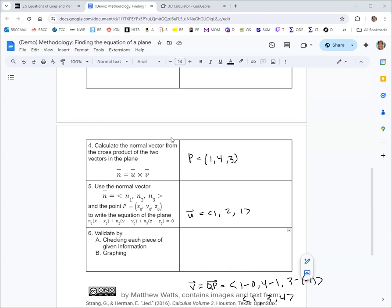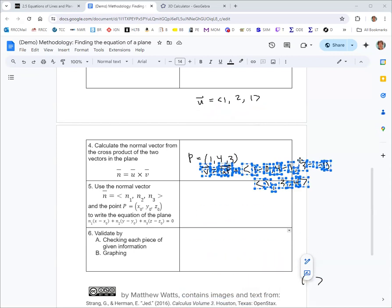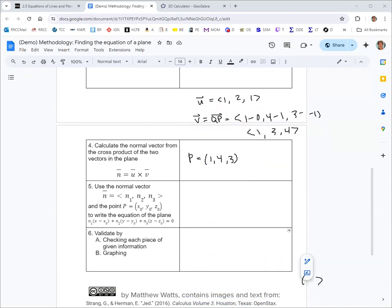All right, so now we will take the two vectors, u and v. And we will take their cross product. The cross product, remember, u and v are both vectors in the plane. And so their cross product should be the normal vector to the plane, which is what we use to get the equation of the plane.